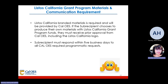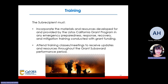CERT materials are required and will be provided by Cal OES. If the subrecipient chooses to produce their own materials with LISTOS California grant program funds, they must receive prior approval from Cal OES including the LISTOS California logo. Subrecipients must respond within five business days to all Cal OES-required programmatic requests. Subrecipients must incorporate the materials and resources developed for and provided by the LISTOS California Grant Program in any emergency preparedness, response, recovery, and mitigation training conducted with grant funding. Attend training classes and meetings to receive updates and resources throughout the grant subaward performance period.